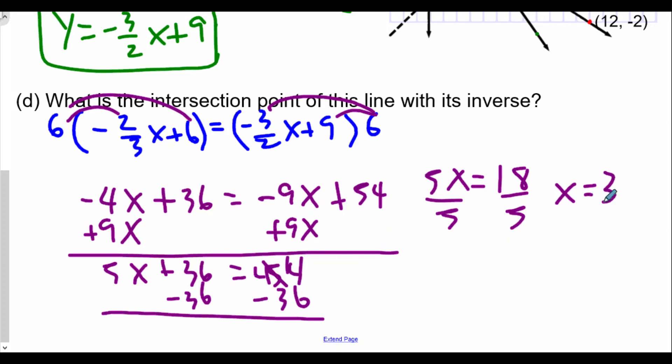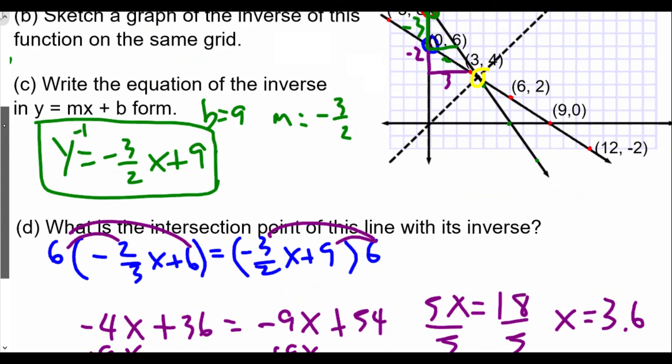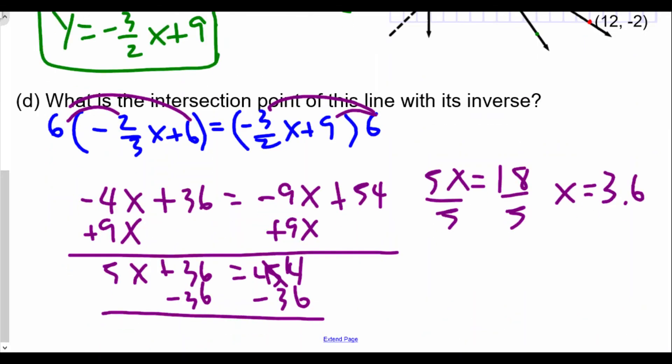We'll plug this into our y value, but the key thing is this y value will have the same exact x value. How do we know? The point of intersection lies on the line y = x. So if we plug it back in, we still get 3.6 for y. The point of intersection for this line and its inverse is (3.6, 3.6).